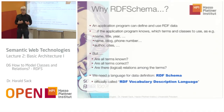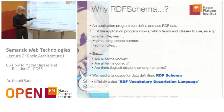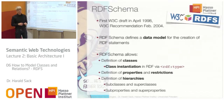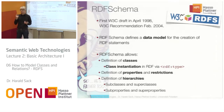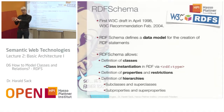Officially, the name of RDF schema is the RDF vocabulary description language. It is a way to define RDF vocabulary, to define classes, to define relations between classes and so on. RDF schema is pretty old — the first draft was in April 1998 and it became a first W3C recommendation in 2004. RDF schema defines a data model for the creation of RDF statements. You have the possibility to define classes and then to instantiate these classes — that is, define individuals as instances of these classes — using the keyword rdf:type.